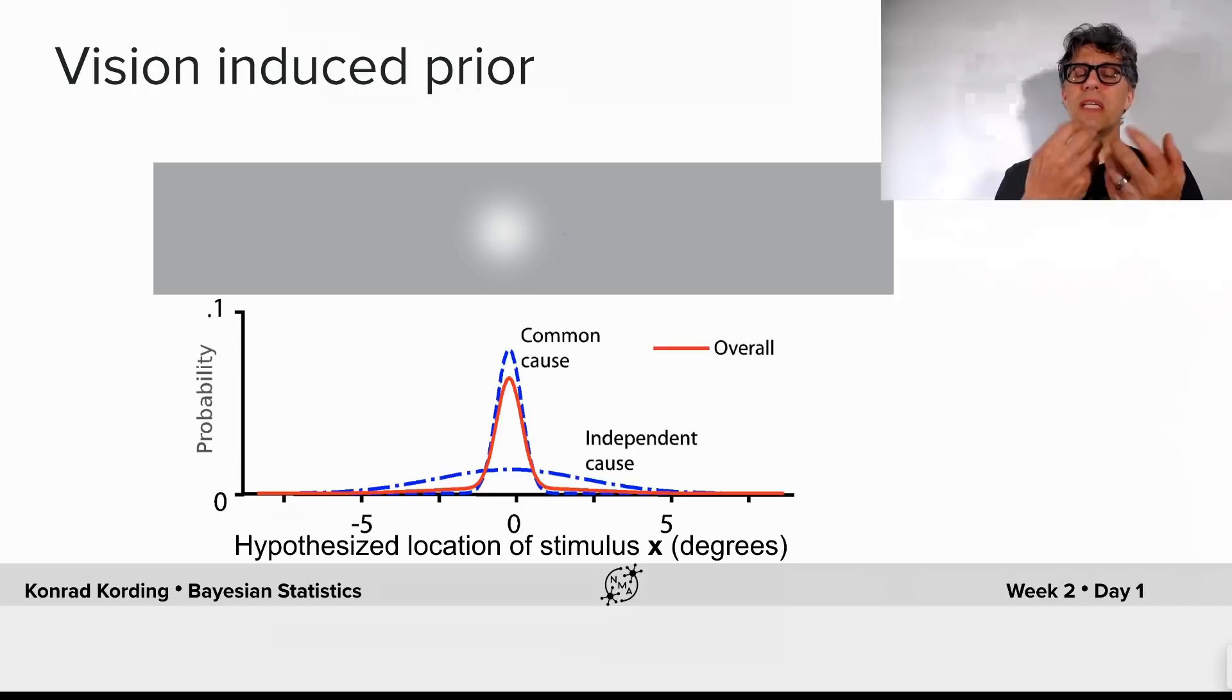So what do we assume now? Now we assume that the vision-induced prior isn't just a Gaussian, but it contains two parts. The common cause part, which is the Gaussian as we had it before, which is the belief that the auditory stimulus often should be coming from close to where the visual stimulus is. But then we assume a largely independent case, where we might believe that they're somewhere close to one another, but it can be quite far away. So that's the so-called independent case.